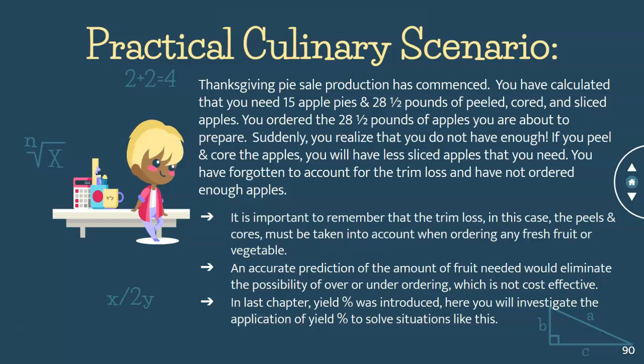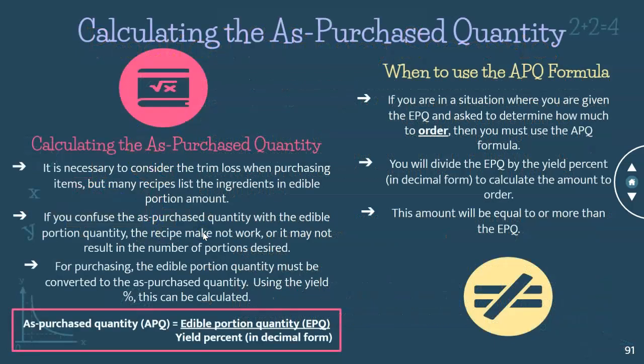As mentioned, in the last chapter we used yield percent, and in this chapter you are going to investigate the application of yield percent to solve situations similar to the pie scenario. To calculate the as-purchased quantity, it's important to consider the trim loss when buying ingredients, to make sure the edible portion amount is accurate. For purchasing, the edible portion quantity must be converted to the as-purchased quantity using the yield percent. The formula is: APQ equals EPQ divided by yield percent expressed as a decimal.